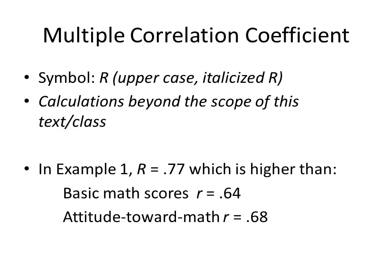The symbol for the multiple correlation coefficient is an uppercase italicized R. The calculations of a multiple correlation coefficient are actually beyond the scope of this book, but it does turn out that for the data in example 1, the multiple correlation coefficient is equal to 0.71, which is higher than either the basic math score Pearson R or the attitude toward math Pearson R.